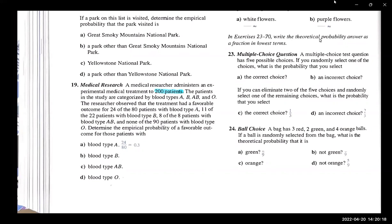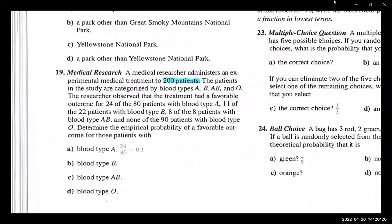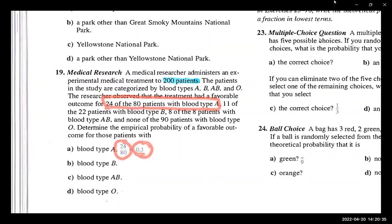Well, with type A, it said 24 of the 80 were favorable outcomes. So 24 out of 80, that's the answer. And they converted it to a decimal too, which you can — all you have to do on your calculator is divide 24 divided by 80. And that's how you get 0.3.